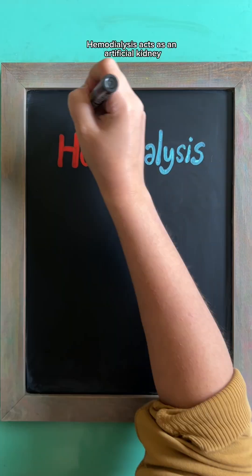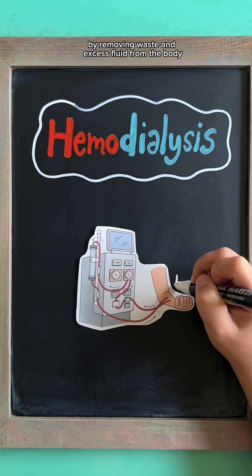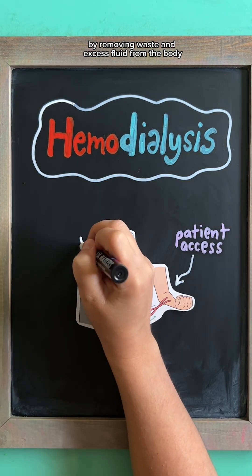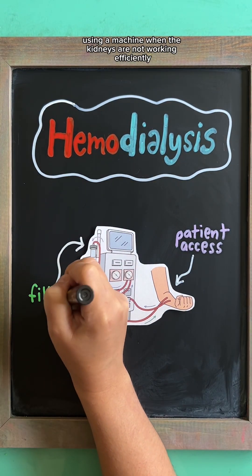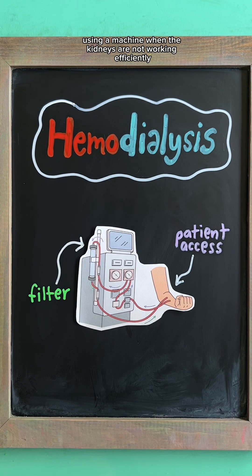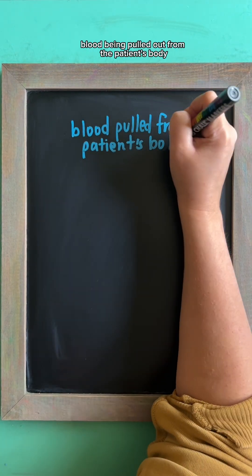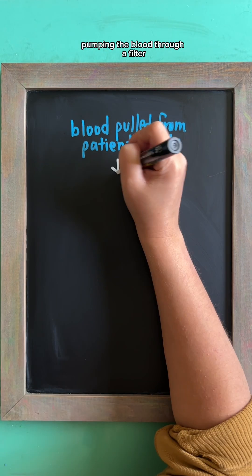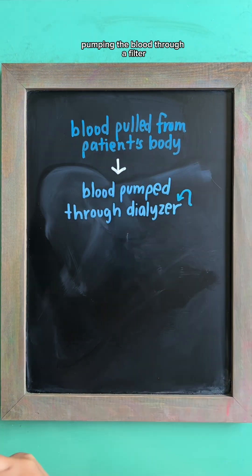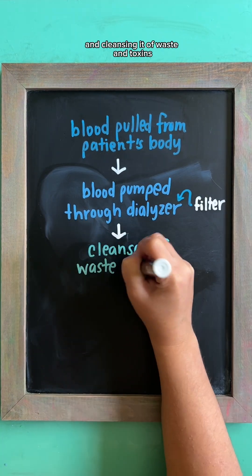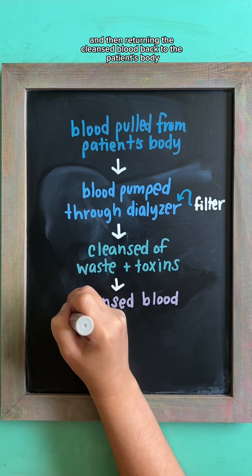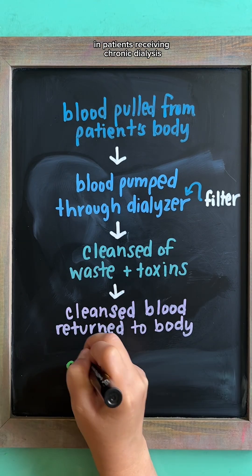Hemodialysis acts as an artificial kidney by removing waste and excess fluid from the body using a machine when the kidneys are not working efficiently. The process of dialysis includes blood being pulled out from the patient's body, pumped through a filter and cleansed of wastes and toxins, and then returned back to the patient's body.